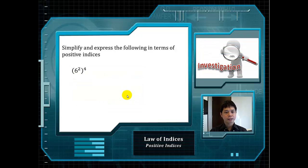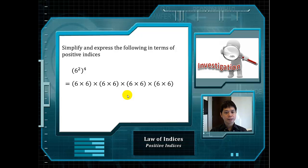Next, we will look at yet another law of indices. Given the example 6 squared to the power of 4, what do you think is the answer? Let's rewrite 6 squared as 6 multiplied by 6. Since it's to the power of 4, we have to do it 4 times. Can you count the number of 6s here? And hence, the final answer should be 6 to the power of 8.